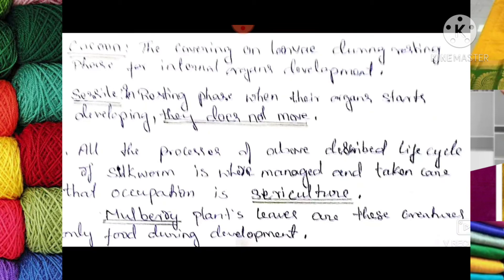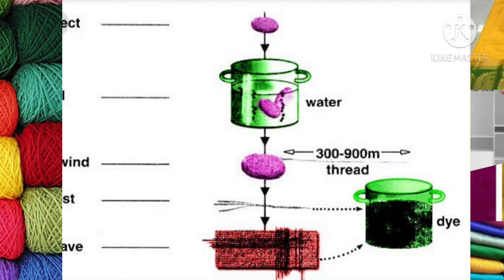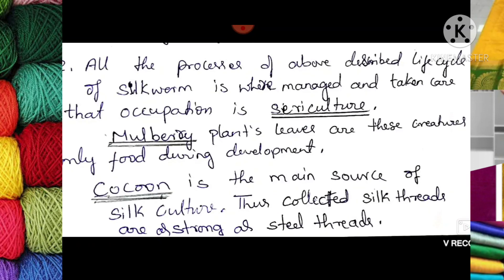The occupation that manages and takes care of all the processes in the above-described life cycle of the silkworm is called sericulture. The mulberry plant's leaves are the only food for these creatures during their development — they eat the leaves of mulberry plants and grow well. The cocoon is the main source in sericulture, and it is collected for silk production.